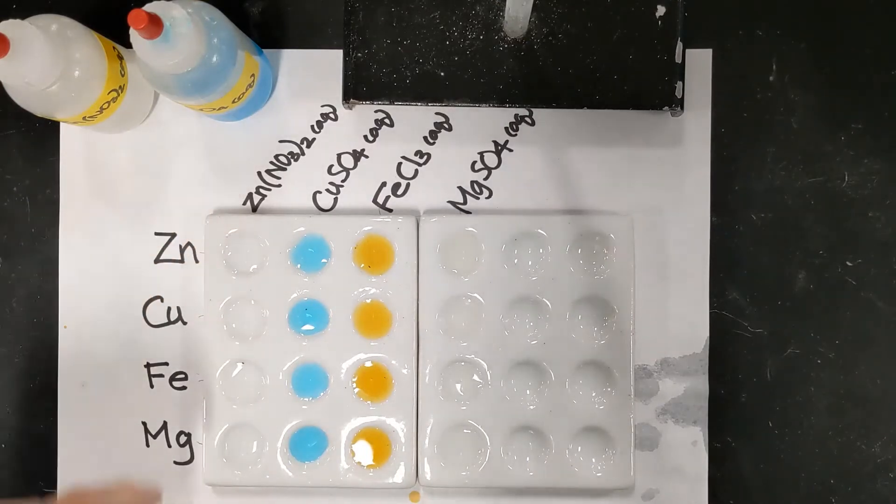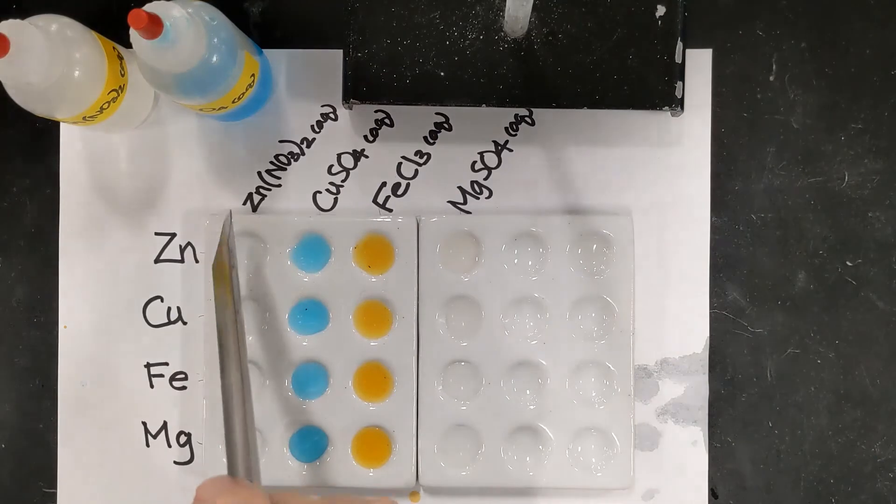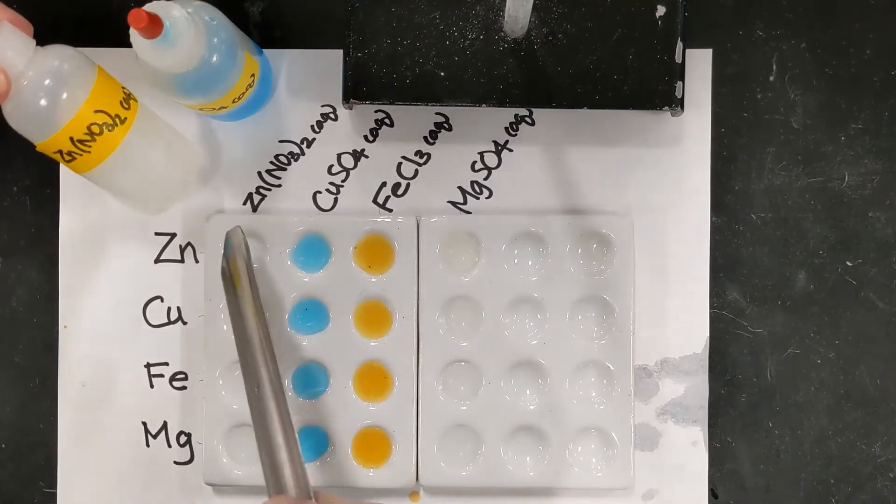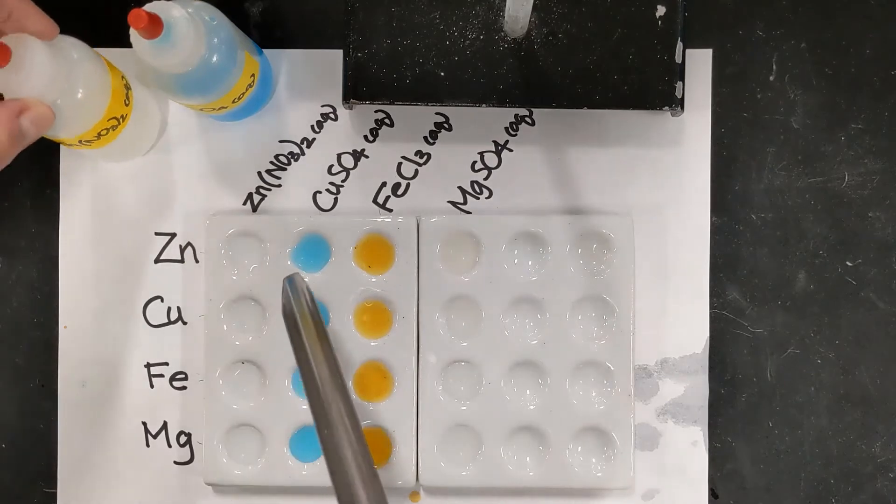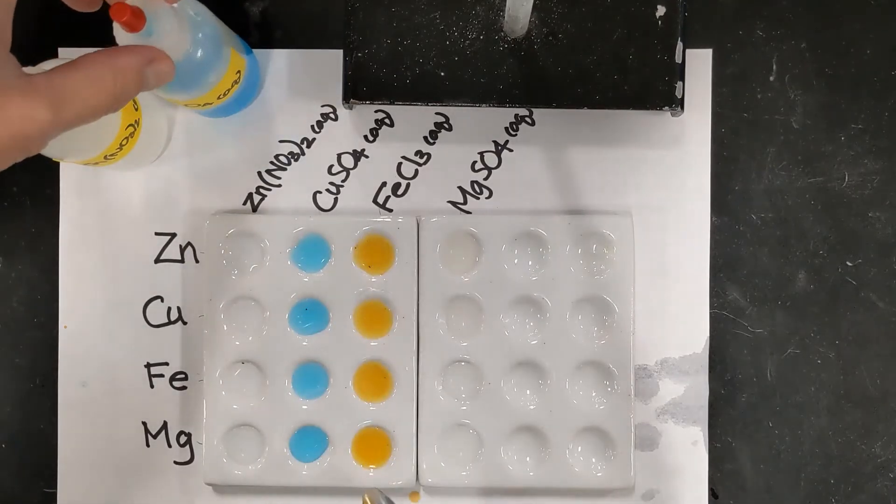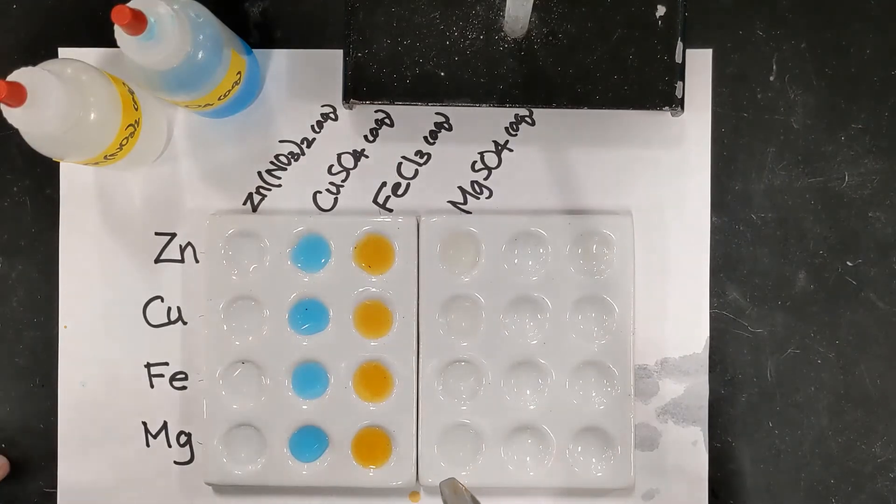So I have in the wells of the spot plate some different ionic salt solutions. Aqueous zinc nitrate solution there, copper 2 sulfate here, iron 3 chloride here, and magnesium sulfate there.